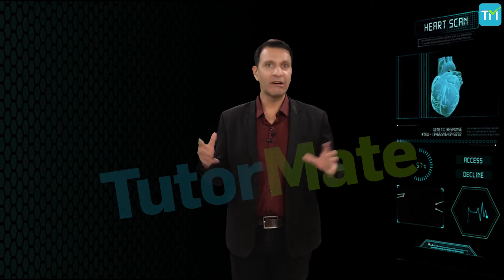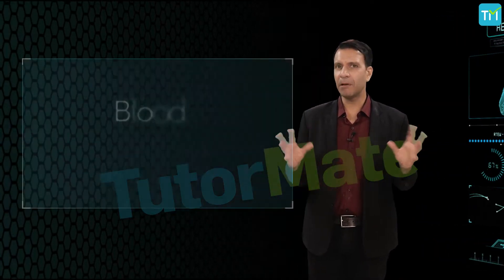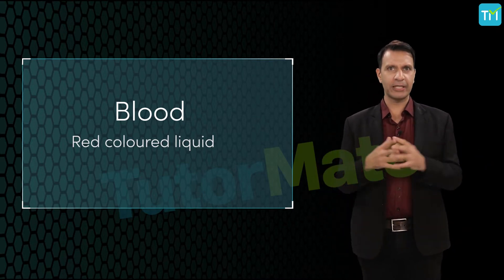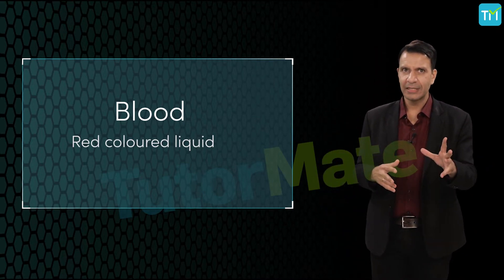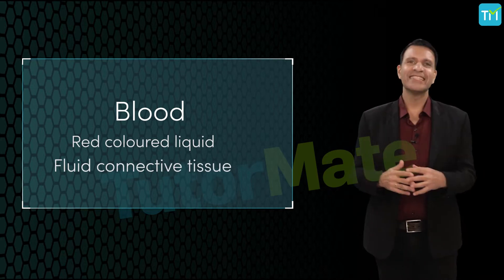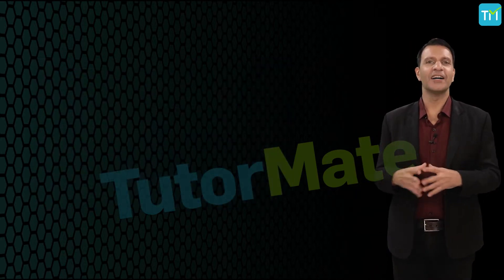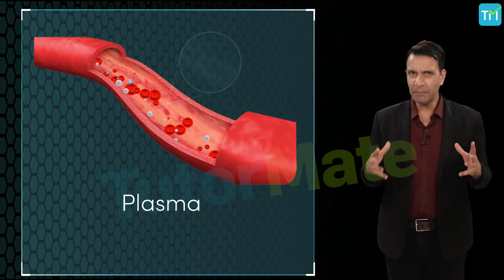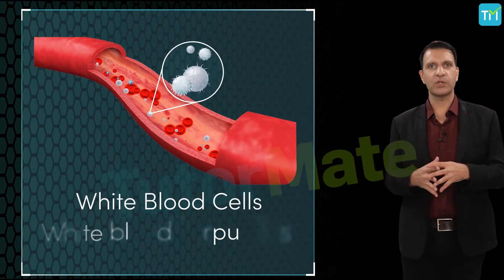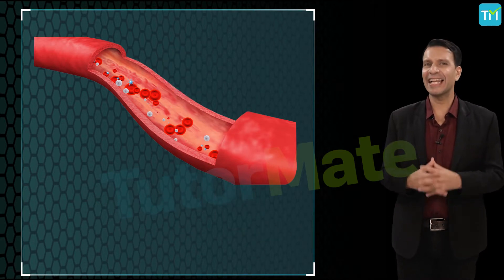Now this is no revelation to you that blood is a red colored liquid which circulates in our body. I hope you all remember that blood is a fluid connective tissue, and its main components are plasma, red blood cells or red blood corpuscles, white blood cells or white blood corpuscles, and platelets.